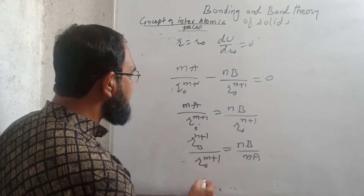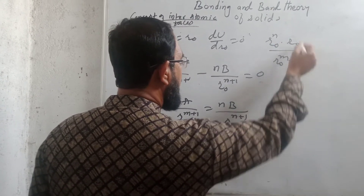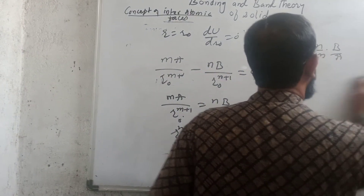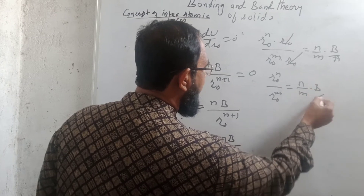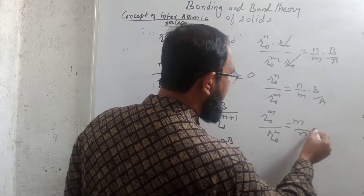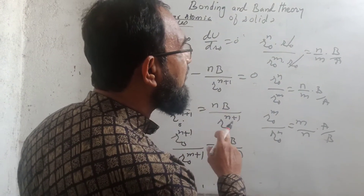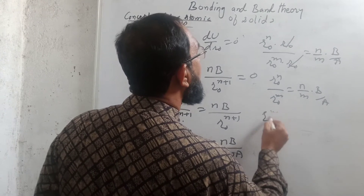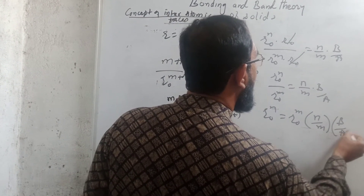This can be written as R0 raised to N times R0 over R0 raised to M times R0, where the R0 terms cancel, giving R0 raised to N minus M equals N over M times B over A. So R0 raised to N equals R0 raised to M times bracket N over M times B over A.